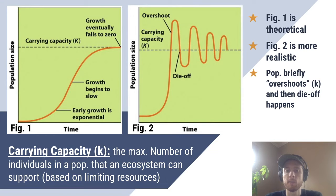It's important to remember that we don't usually see a population maintain a perfect carrying capacity, like this theoretical graph in figure one. Usually populations experience overshoot, where there are briefly more organisms than the ecosystem can support, and then a die-off as some of these organisms starve, are eaten by a predator, or fail to find the habitat they need in order to survive.